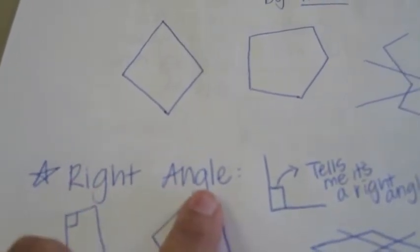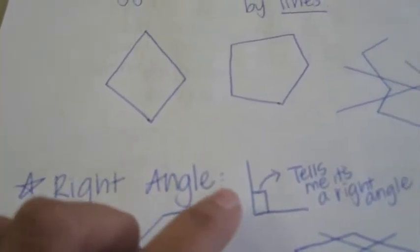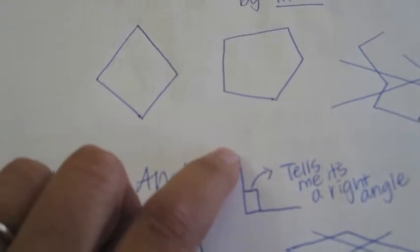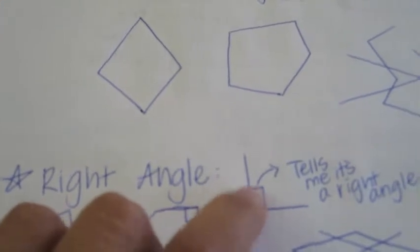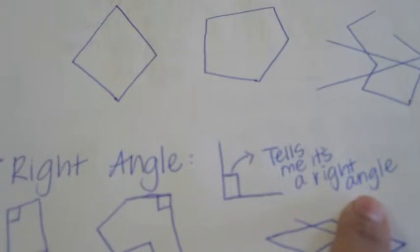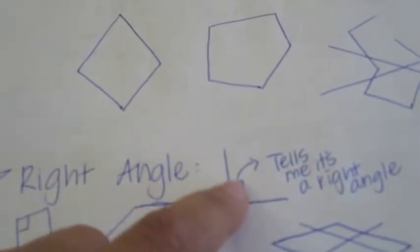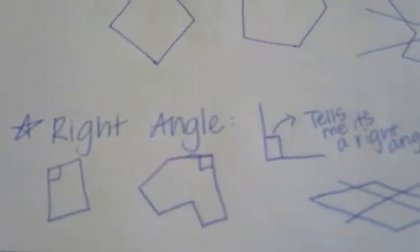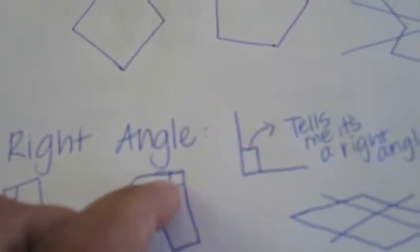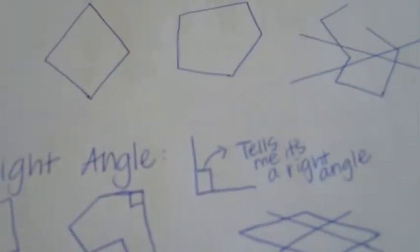This is a right angle. When you make a right angle, use your ruler. This little box right here tells me that it's a right angle. So if you draw two lines together like this, or two lines like this, I know by looking to see that box — that little box right there — that that's a right angle, meaning it's 90 degrees.